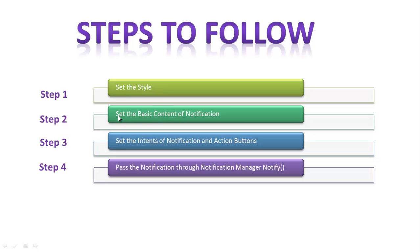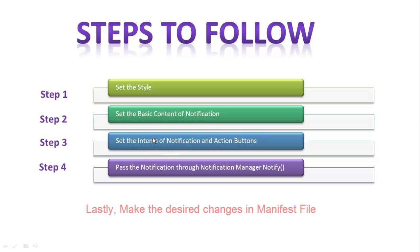The second step is to set the basic content of the notification — the text and content you specify in step two. The third is to set the intents of the notification and the action buttons if you are using them: create an intent, set that to pending intent, and finally set that to the builder. Step four is to pass the notification through the notification manager notify function. These four steps are sufficient to create any kind of notification.